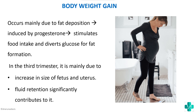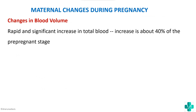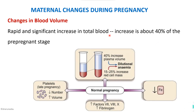Next, changes in blood volume: there is a rapid and significant increase in total blood volume, about 40% above the pre-pregnancy level. This is because there is a 40% increase in plasma volume and a slight increase in red cell mass too. However, because the increase in plasma is proportionally greater, we have a dilutional anemia.